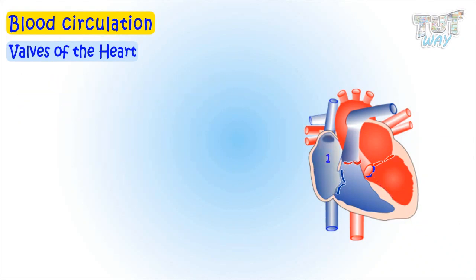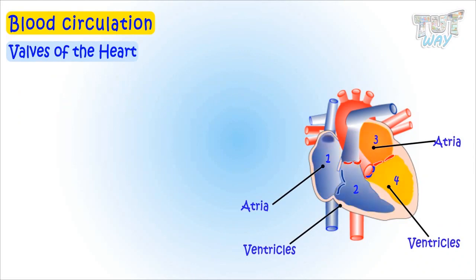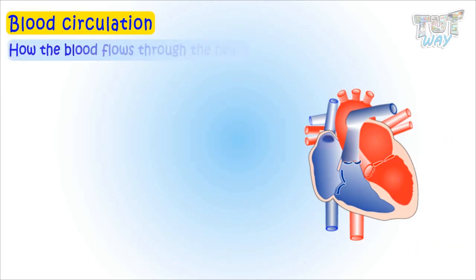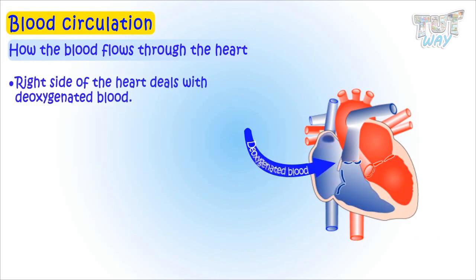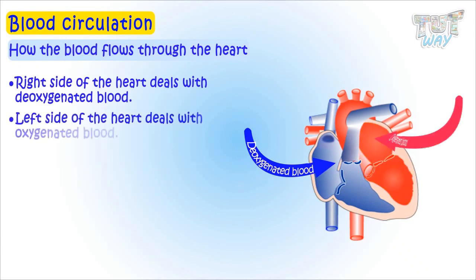Now we know about the four chambers and the four main valves of the heart. The right side of the heart deals with deoxygenated blood, and the left side of the heart deals with oxygenated blood.